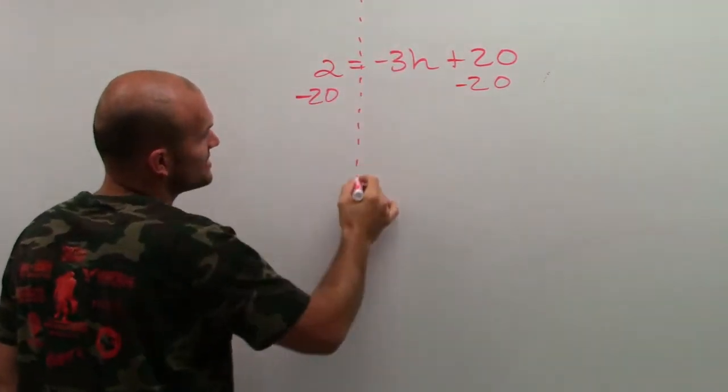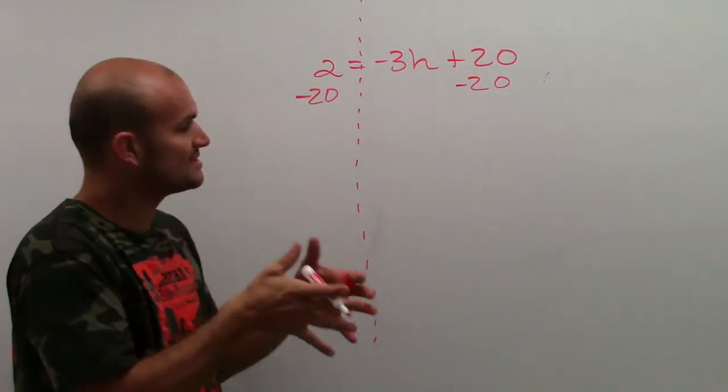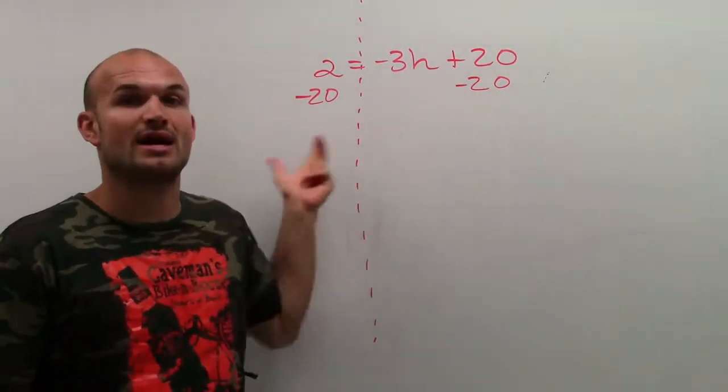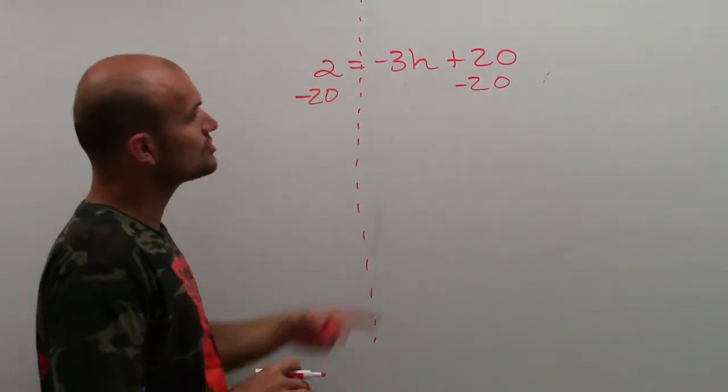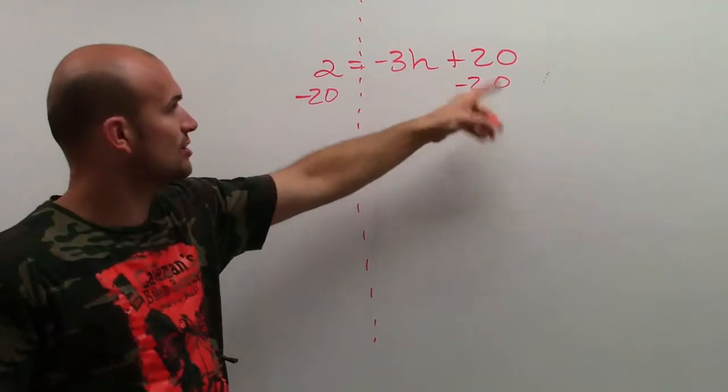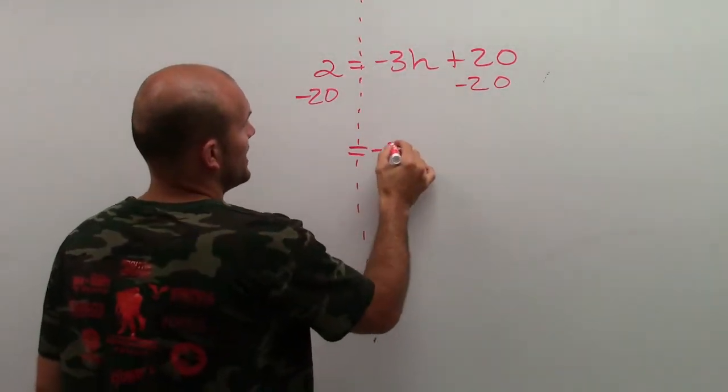You can think of both sides of the equal sign, and a lot of times we write a little dotted line to help us understand that. You need to make sure you subtract on both sides of the equal sign. So 20 minus 20 is 0. 0 plus negative 3h is just going to still leave me with negative 3h.